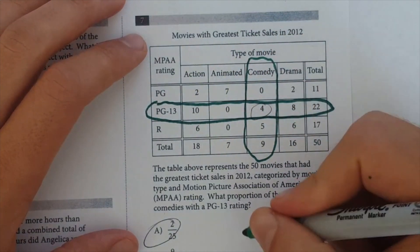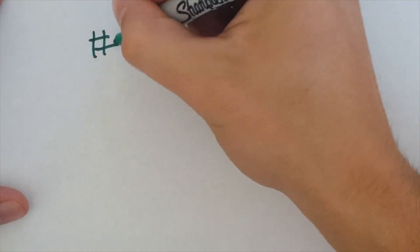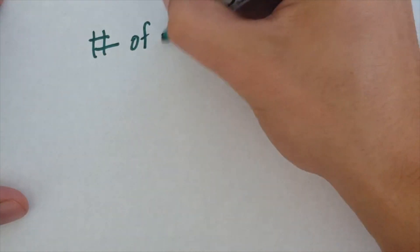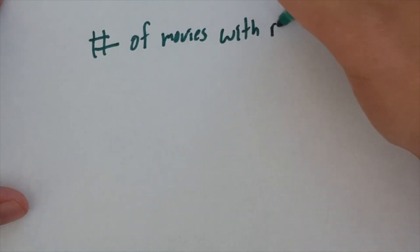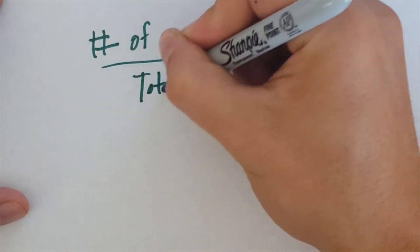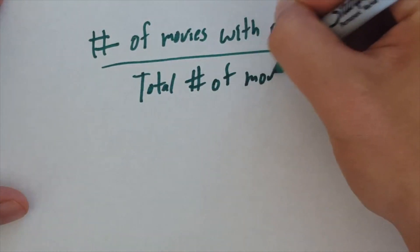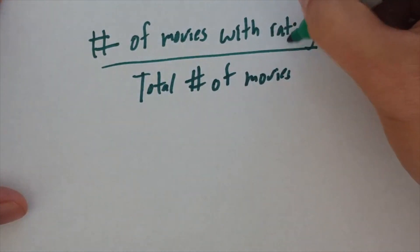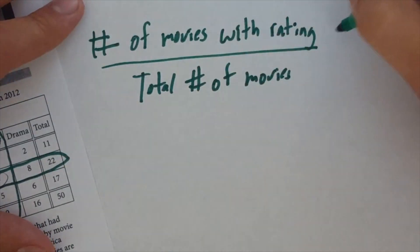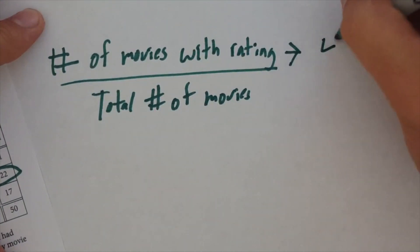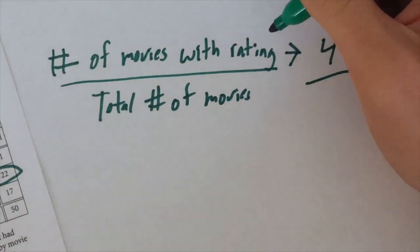Alright, so the proportion of movies is going to be, let's go back over here, it's going to be number of movies with certain rating divided by total number of movies. Alright, now we said that this, alright, if you look back here, is going to be 4.